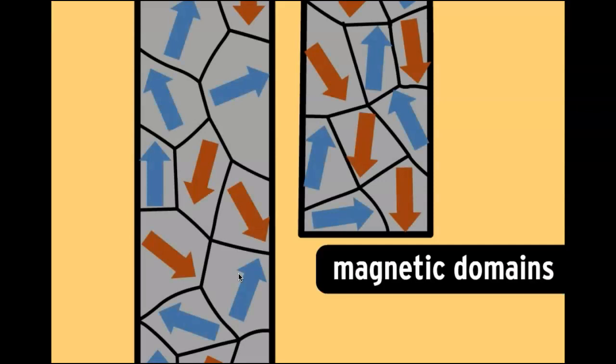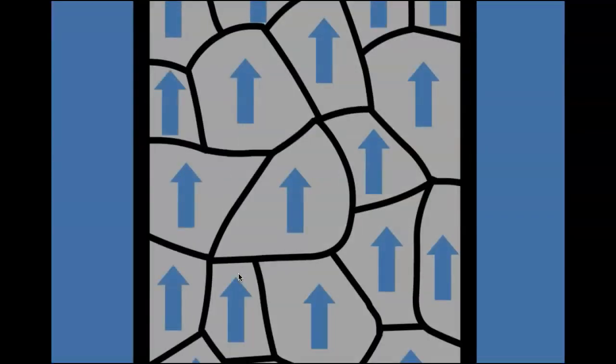Well, all metals have arrangements of atoms inside them called magnetic domains. Usually, the poles of these domains are jumbled up, so they pretty much cancel each other out. But the domains inside of a magnet are a different story.